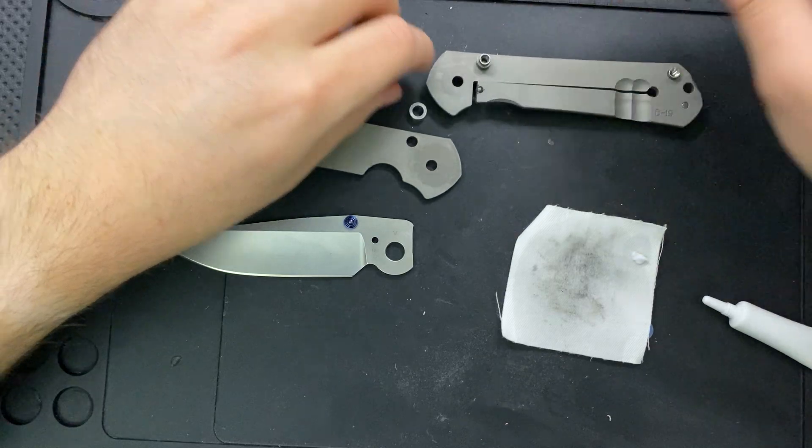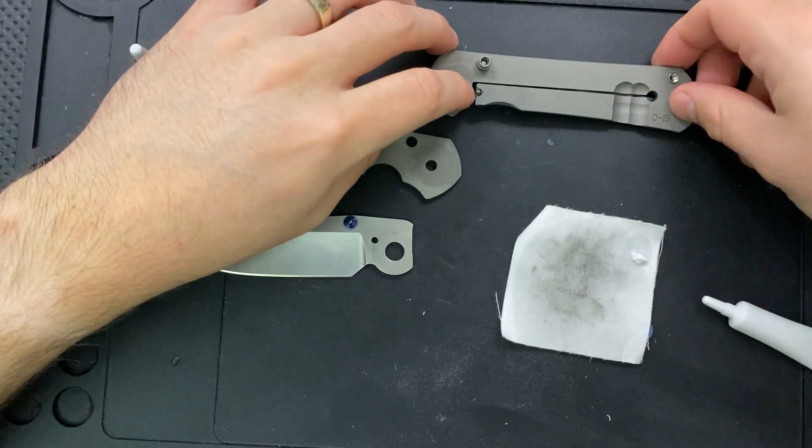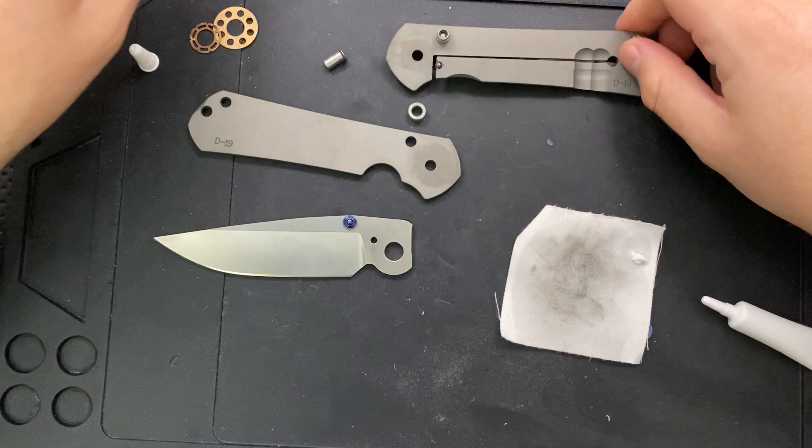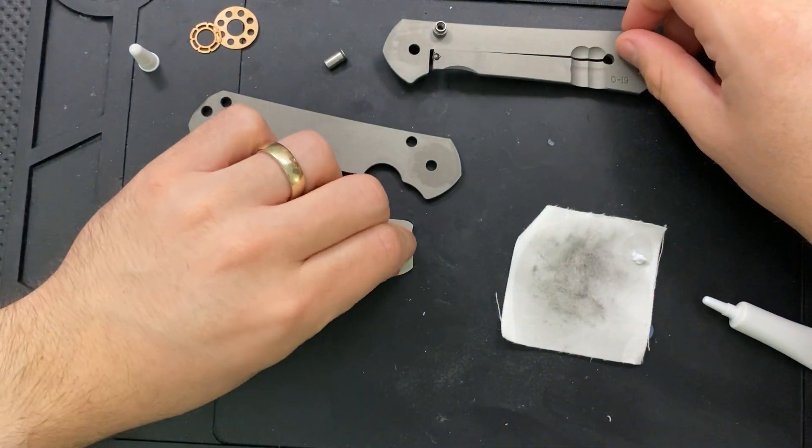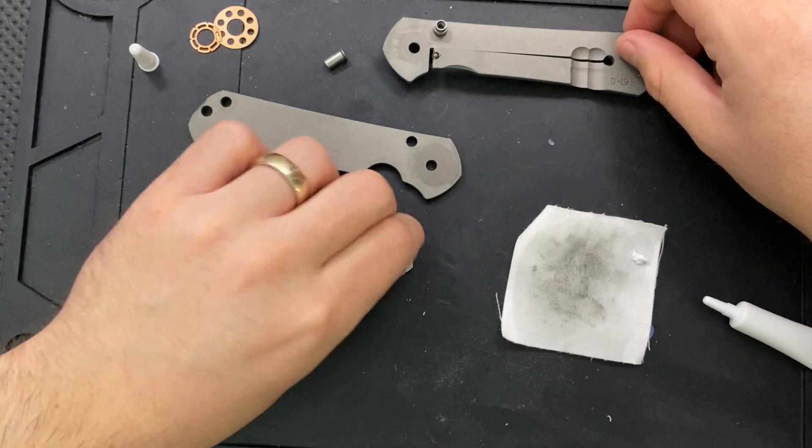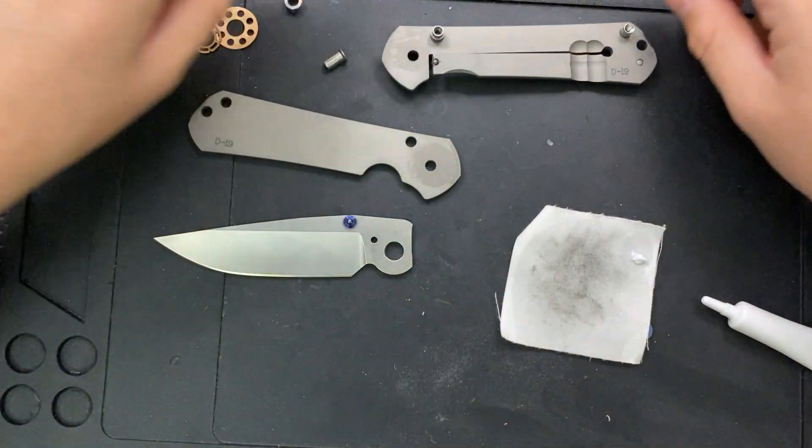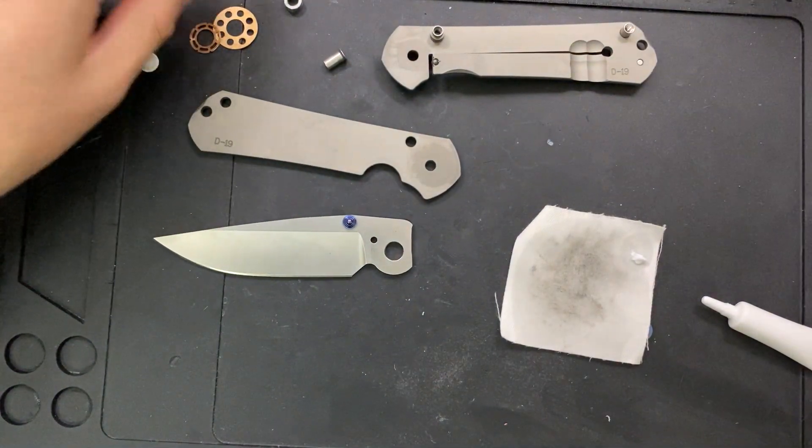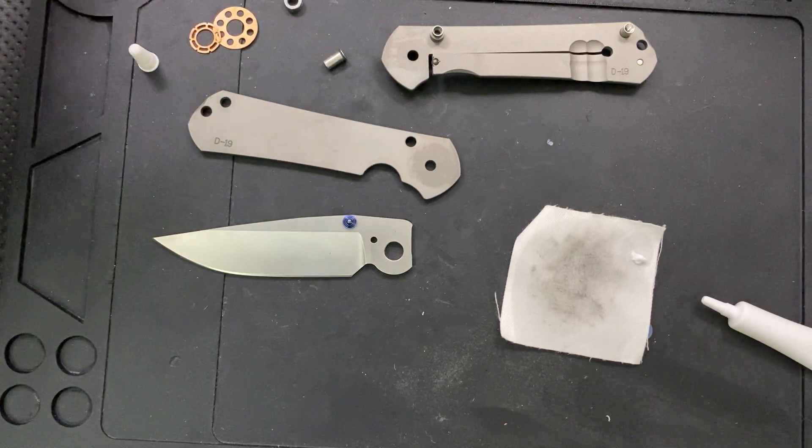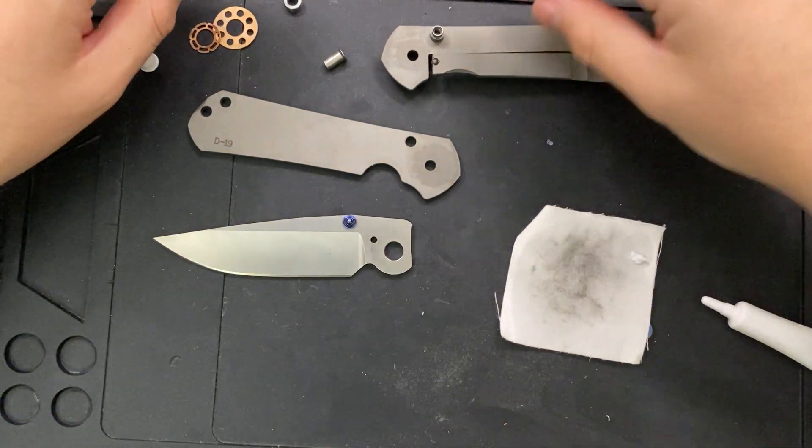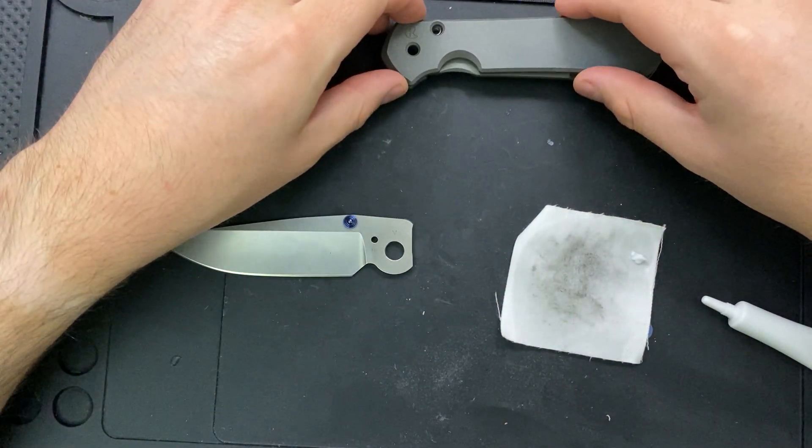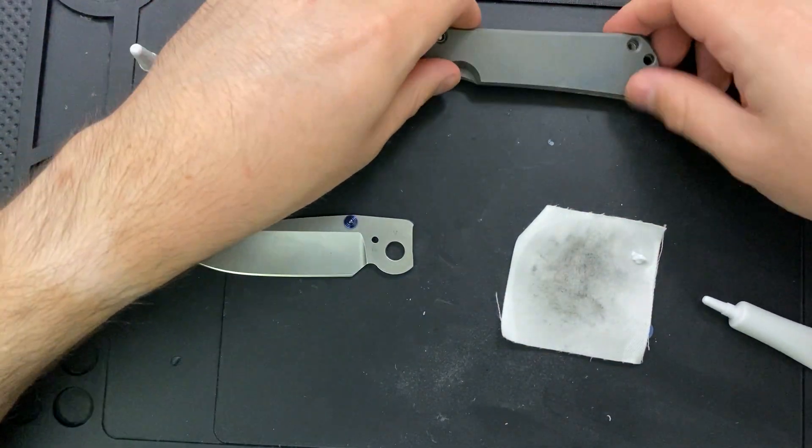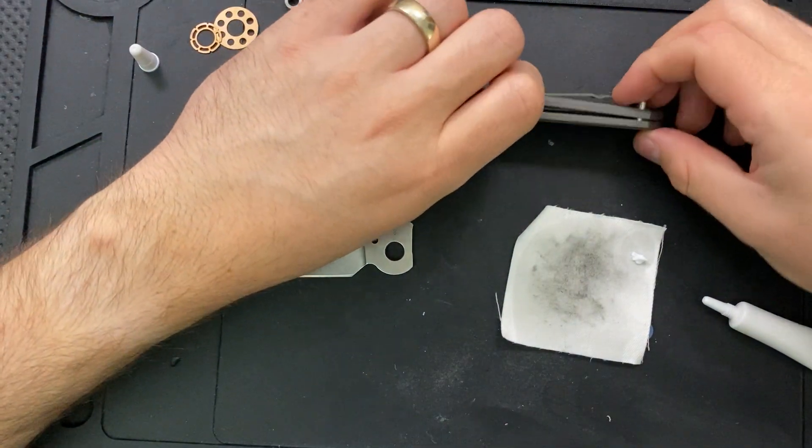Now, that said, already I can hear the Chris Reeve fanboys yelling at me. Some of the greatest hate I've gotten on the channel, actually, has been from the Chris Reeve people. Not the knife makers. I got no issue there, at least in my pretty limited interactions with them. But from the people on the Blade forums, who are entirely convinced that I don't know what I'm doing when disassembling a Sebenza. And their argument, and frankly, they've got a point here.